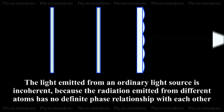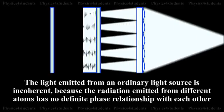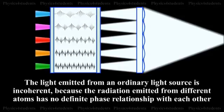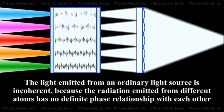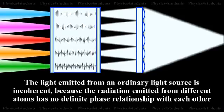The light emitted from an ordinary light source is incoherent because the radiation emitted from different atoms has no definite phase relationship with each other.